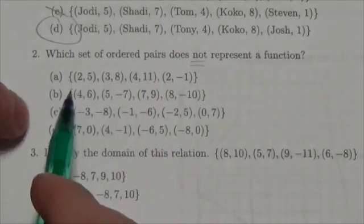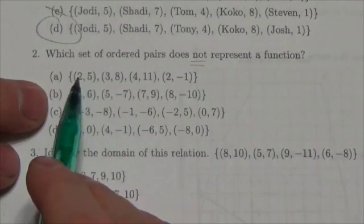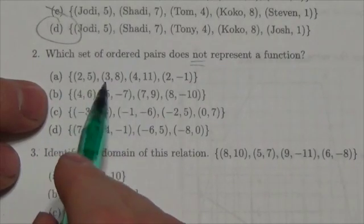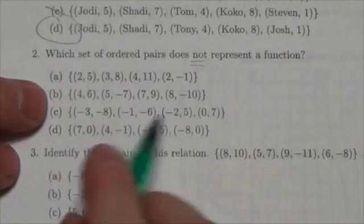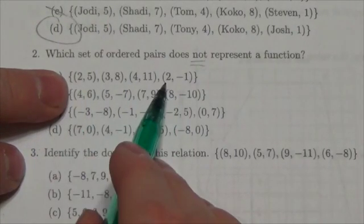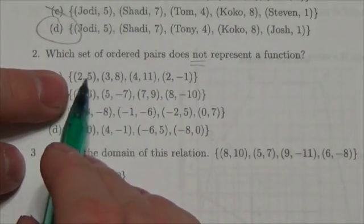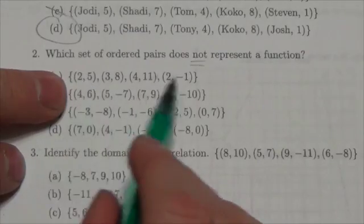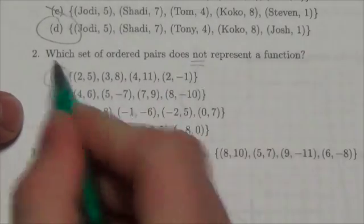So which of the following does not represent a function? Well, take a look at the first one. Look at the independent variables first: 2, 3, 4, 2. Well, there is some duplication here—2 and 2. So I'm going to have these two points above each other; they've got two different y-coordinates. This is not a function.